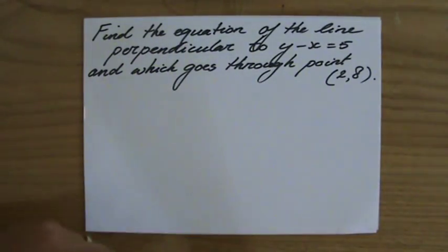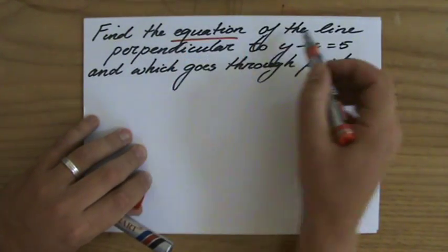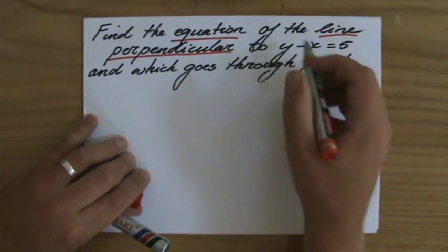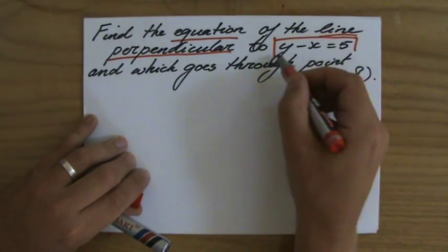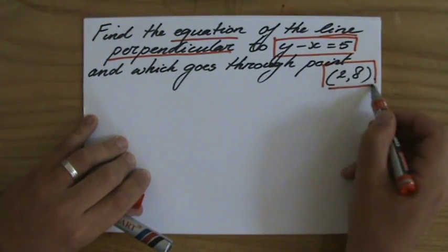That's a lot of information and let's highlight some of those keywords. So I have to find an equation of a line and it has to be perpendicular to this equation or this function and has to go through point (2,8).